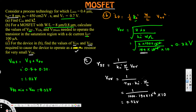With V_OV = 0.52 V, V_GS = V_OV + V_T = 0.52 + 0.7 = 1.22 V. That's the answer for part (c), and that's how we solve this type of MOSFET problem.